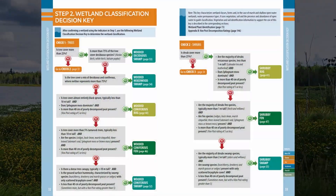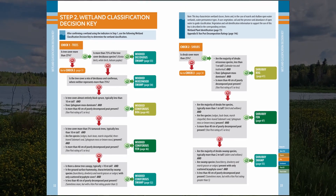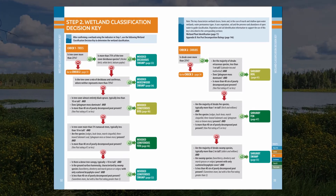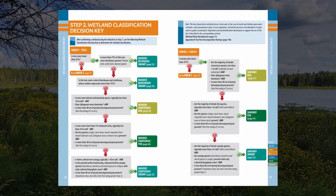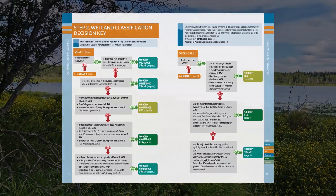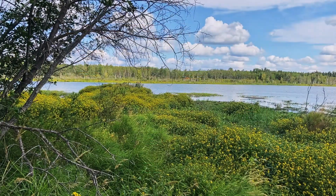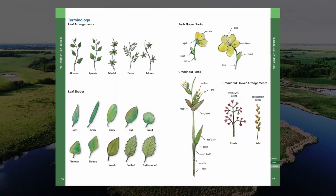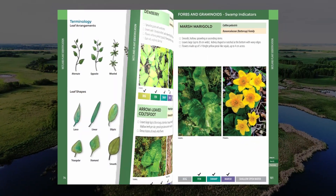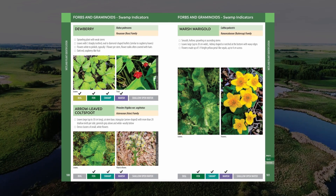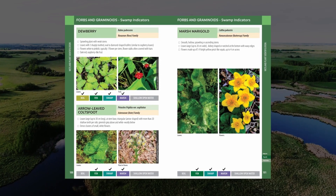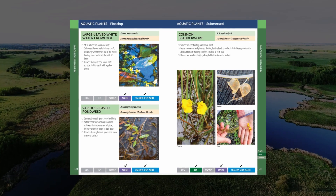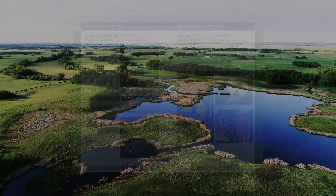The Alberta Wetland Classification System Field Guide provides a classification decision key to walk users through a step-by-step process in identifying the wetland class, form and type. The key relies on using readily observable characteristics and particularly common wetland plant species to guide your classification. A plant identification section of the guide describes over 80 of the most common Alberta wetland plants.